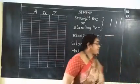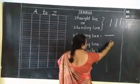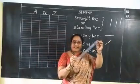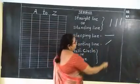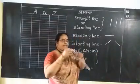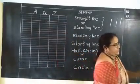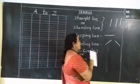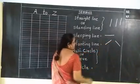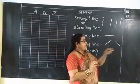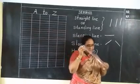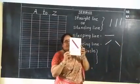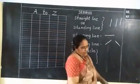And the next line is slanting line. This is right-to-left slanting line — right slanting line. See here everybody, this is right slanting line. And then this is left slanting line. From left to right you draw a line. This is left slanting line. What is this? Left slanting line.